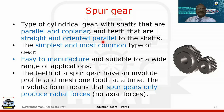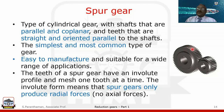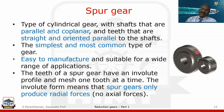The spur gear is a cylindrical gear with parallel and coplanar shafts. The teeth are straight and oriented parallel to the shaft, and it is very easy to make — the simplest type of gear transmission. They have an involute profile, formed by unwinding a cord from the base circle and tracing the path. The involute form means that spur gears only produce radial forces and no axial forces.